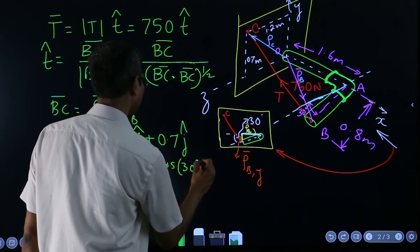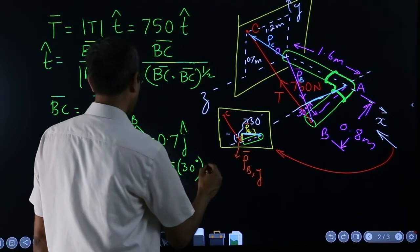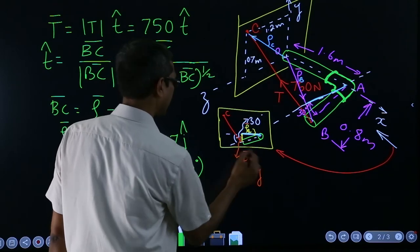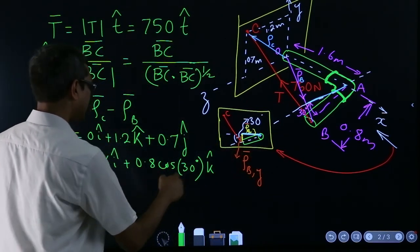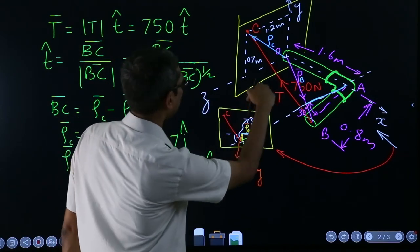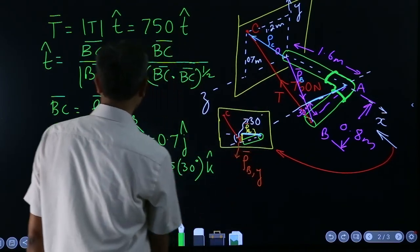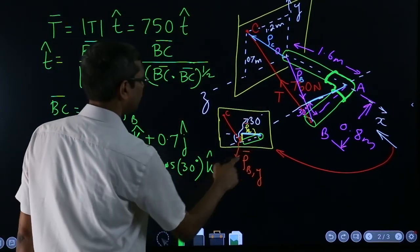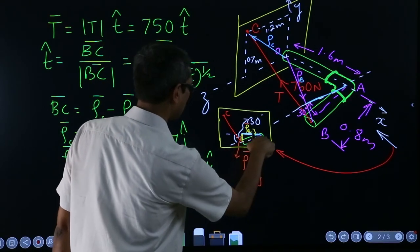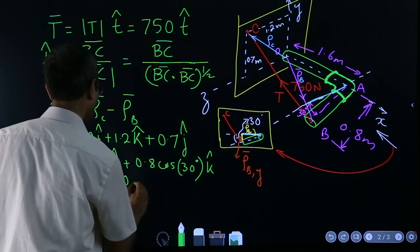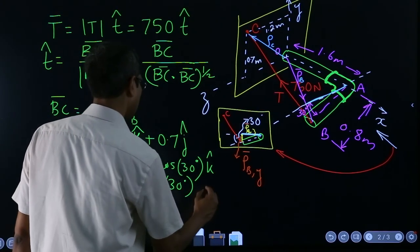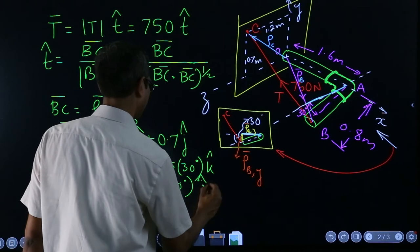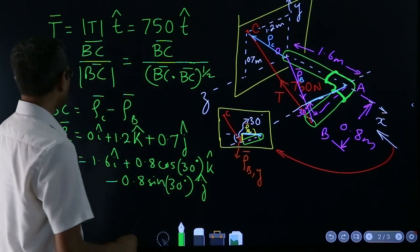And this was positive, but now I have to go down, so minus - this is the sine theta component of the same thing - 0.8 sine of 30 degrees times j.